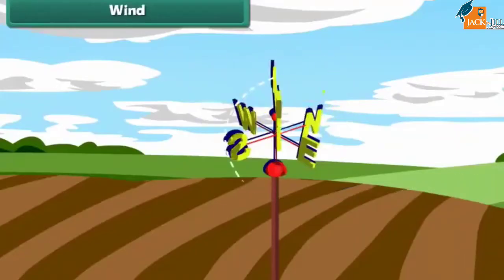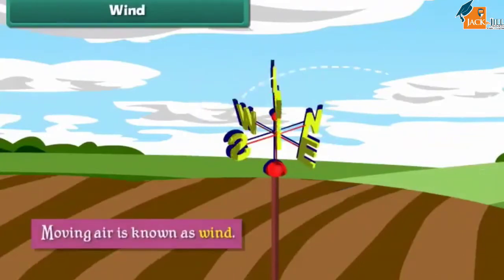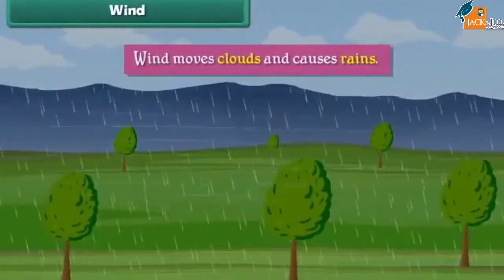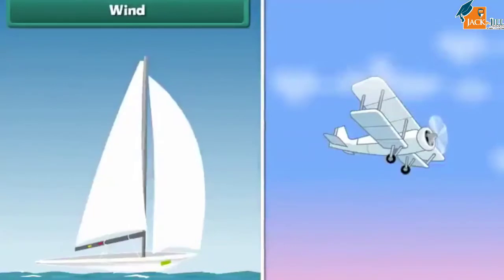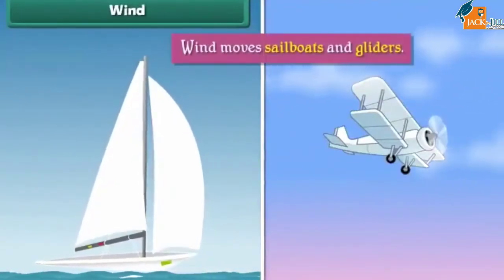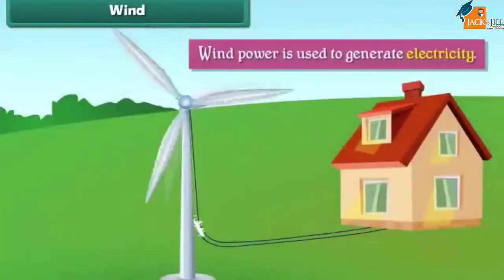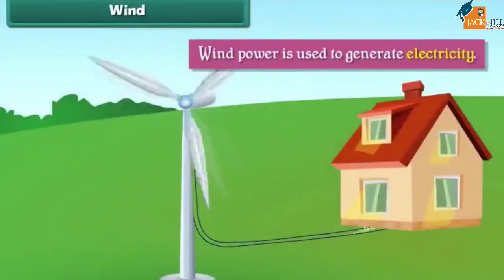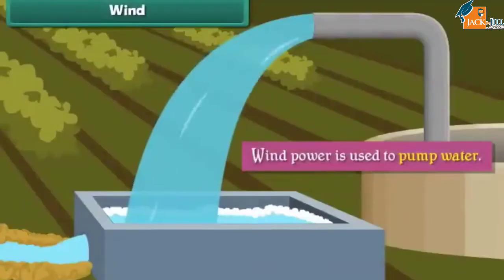Wind: Moving air is known as wind. Wind moves clouds and causes rain. Wind moves sail boats and gliders. Wind power is also used to generate electricity and to pump water.